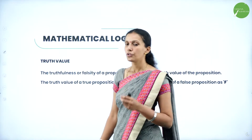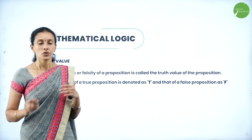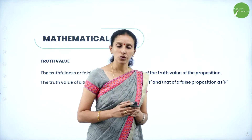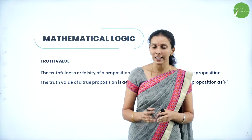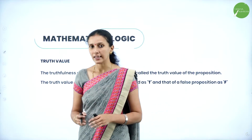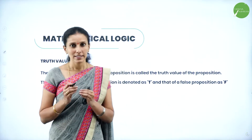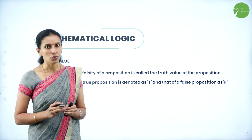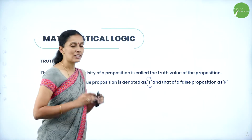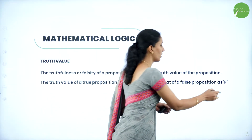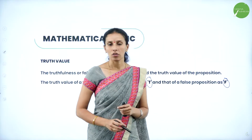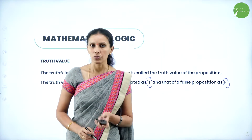Next we come across truth value. The truthfulness or the falsity of the proposition is nothing but the truth value. If the statement is true, it is denoted by T. If the statement is false, it is denoted by F. These are all called the truth values.